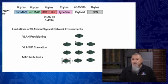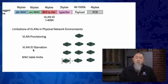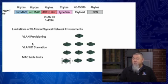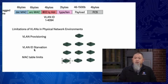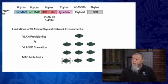The second limitation is VLAN ID starvation — essentially running out of VLAN IDs. If even one tenant requests more than one VLAN, the number I can assign reduces by at least one each time. In the cloud, with networks scattered across three or four data centers worldwide, managing these things with regular VLANs takes a lot of provisioning time, and running out of VLAN IDs is a real issue.